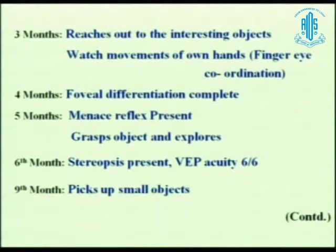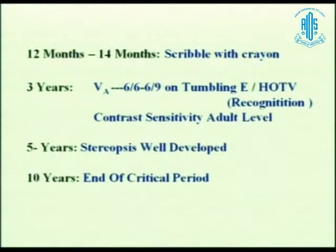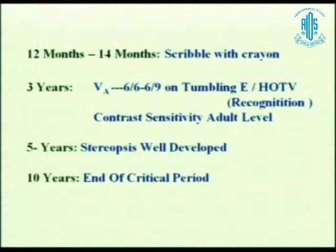At 3 months, the child would start reaching out to interesting objects like bright objects and bright light. At 4 months, foveal differentiation will be complete — again, these are all broad ranges. By 6 months, stereopsis is there and VEP visual acuity is 6/6. VEP visual acuity does not mean Snellen's visual acuity. By 12 to 14 months, the child will start scribbling. At 3 years, measurable visual acuity using HOTV, tumbling E-test, or illiterate hand chart would reach adult level — not because the kid doesn't see adult-level earlier, but because it involves verbal response. By 5 years, stereopsis is completely developed, and by 10 years it is the end of the critical period.